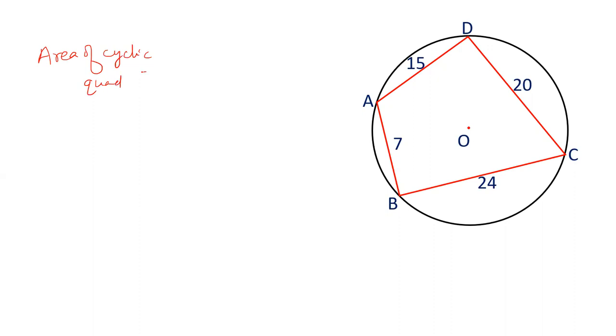Under root (s-a)(s-b)(s-c)(s-d), where s is the semi-perimeter. So let's find out the value of semi-perimeter. Sum of all the sides: 7 plus 24 plus 20 plus 15 divided by 2. 7, 24, 31 plus 5, 36, 46, 66. Sum of this number is 66 divided by 2 is 33.